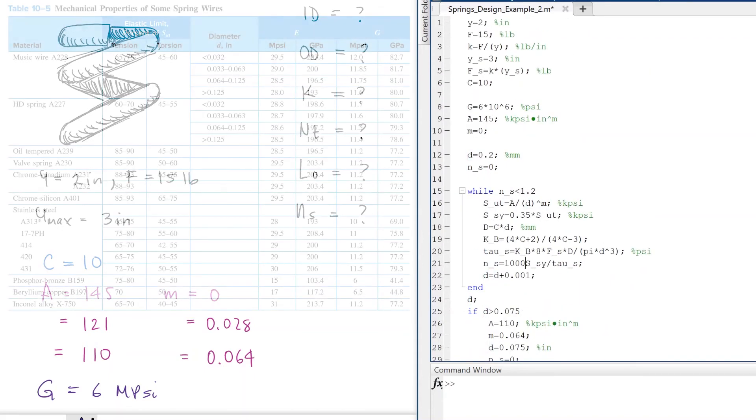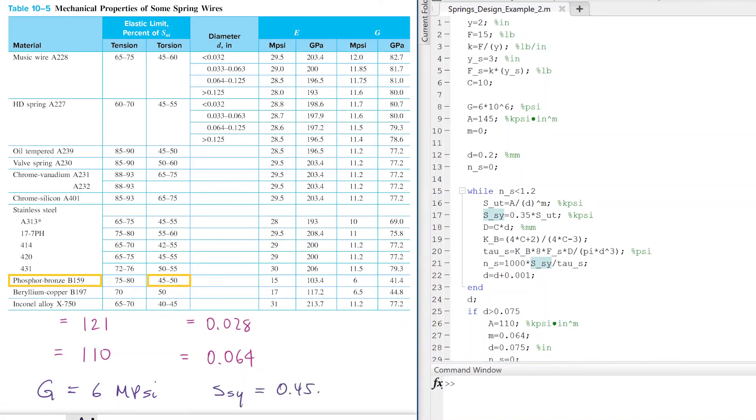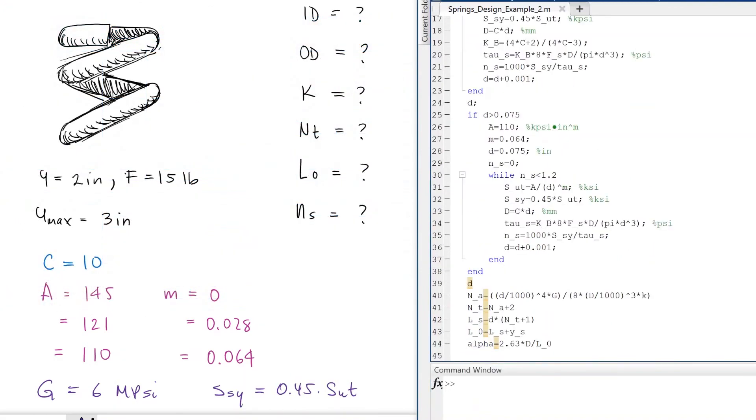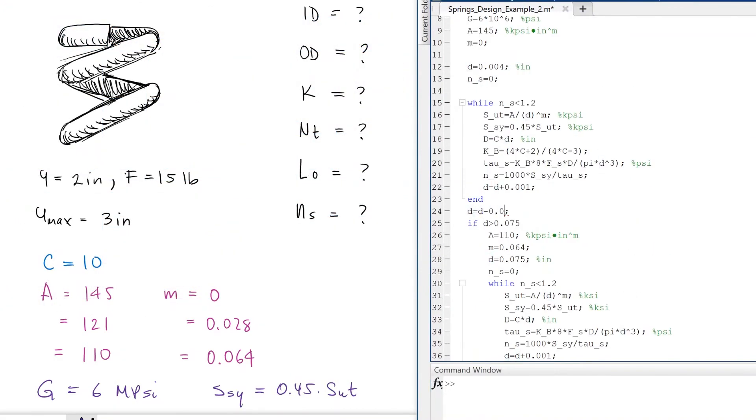We check for units and for phosphor bronze we see that the shearing yield strength is 45% of the ultimate strength. We check for units in all loops and also in the last few lines.